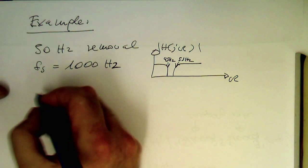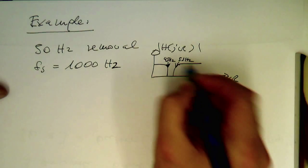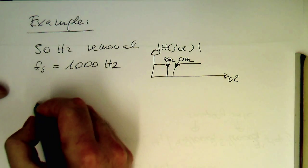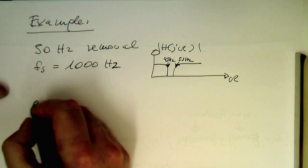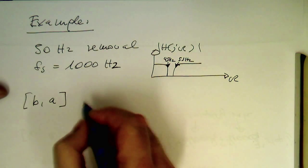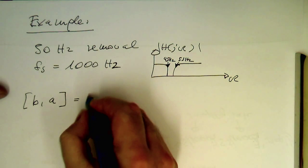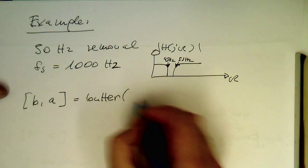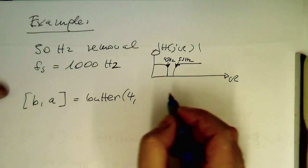So obviously, we would like to design a digital filter with a bilinear transform. And so the only thing what we need to do is B, A and just write butter and then the order, let's say filter order 4.